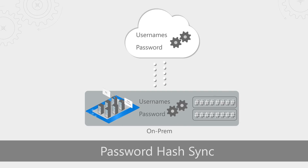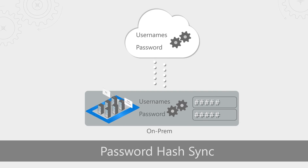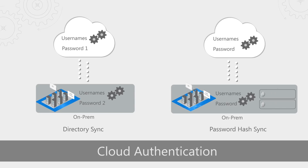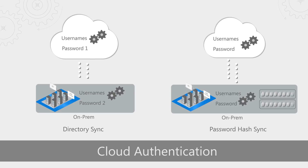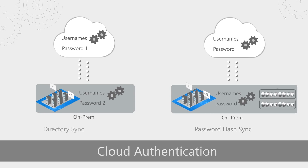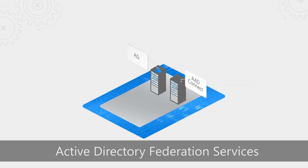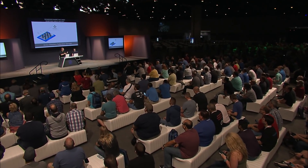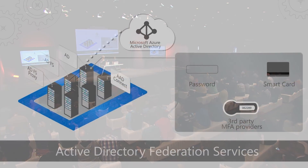Then some people use password hash sync. That takes a hash of a hash of your password, copies it up to the cloud, and then you can sign in with the same username and password in both. This is pretty popular, particularly with smaller businesses, where they just want something simple and fast. If you're a big enterprise, you probably use Active Directory Federation Services. This has the advantage that when someone goes to authenticate with Azure AD, their passwords are back on-premise, and you get to use smart cards and third-party MFA providers that ADFS has traditionally integrated with.